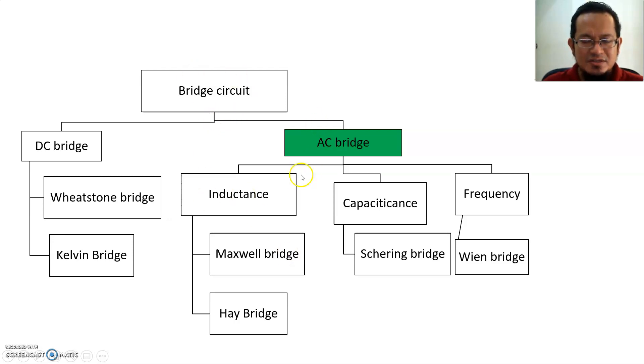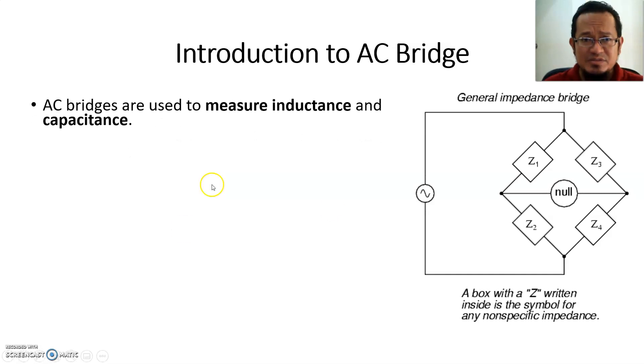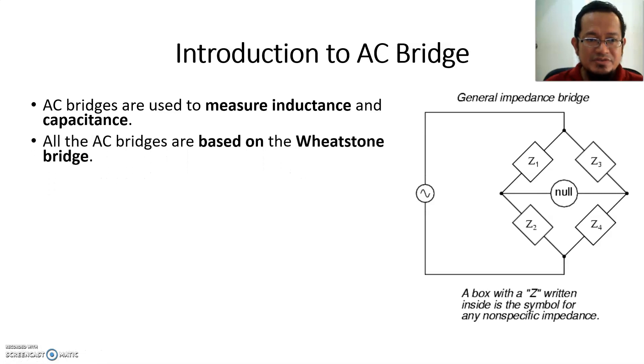For the next few lessons we are going to cover Maxwell Bridge, Hay Bridge, Schering Bridge, and Wien Bridge. Let's talk about introduction to a general AC bridge. Basically, AC bridges are used to measure inductance and capacitance as well as resistance. All the AC bridges are based on the Wheatstone bridge, as you can see from the graphic on your right here.